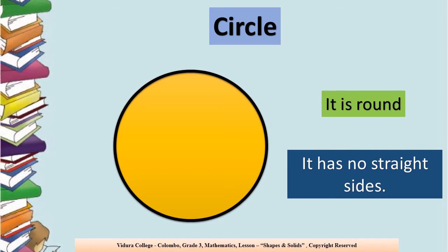Now teacher wants to check whether you all can write the names of the shapes correctly. I hope you all have the personal whiteboard with you. Let's quickly take it out. Teacher is going to tell the name of the shape and you have to write it in your personal whiteboard. First, write the word circle. Then square. And next, rectangle. And the last one is triangle. You all can check your answers by yourself.